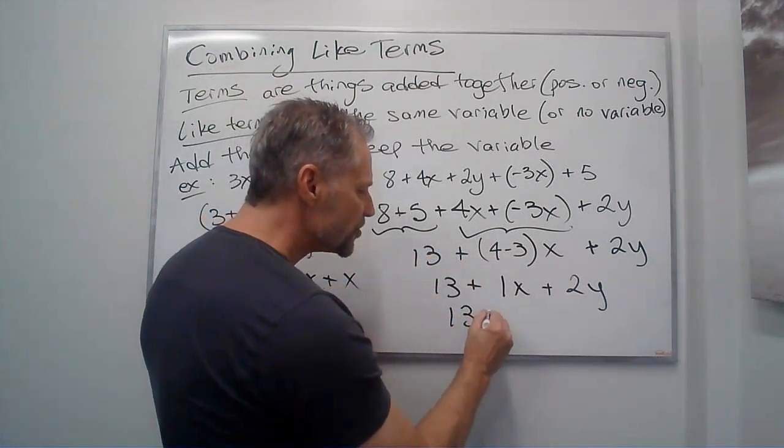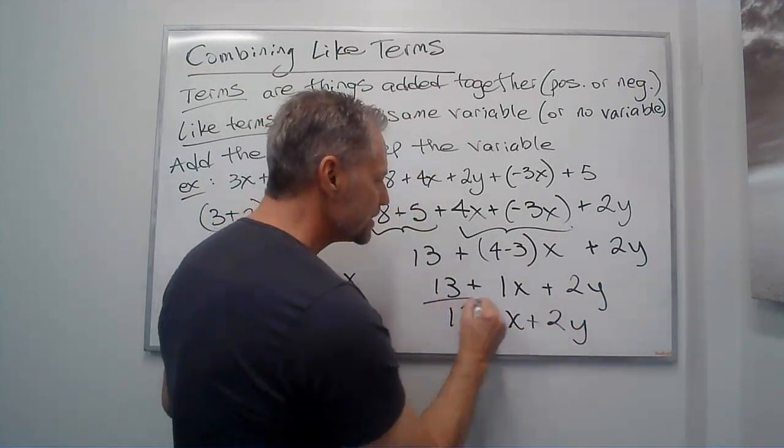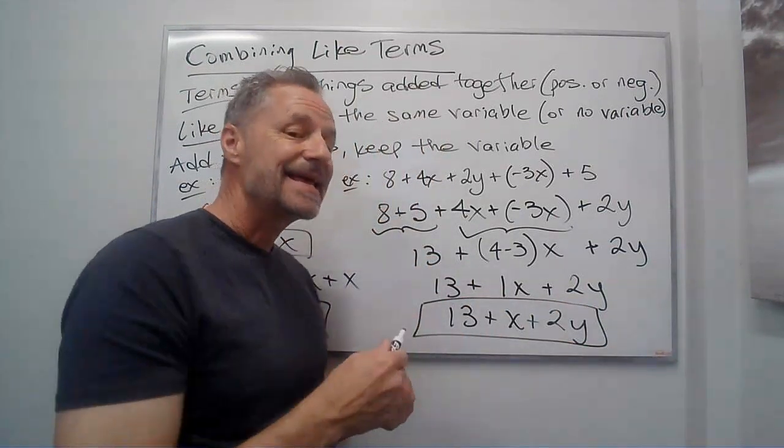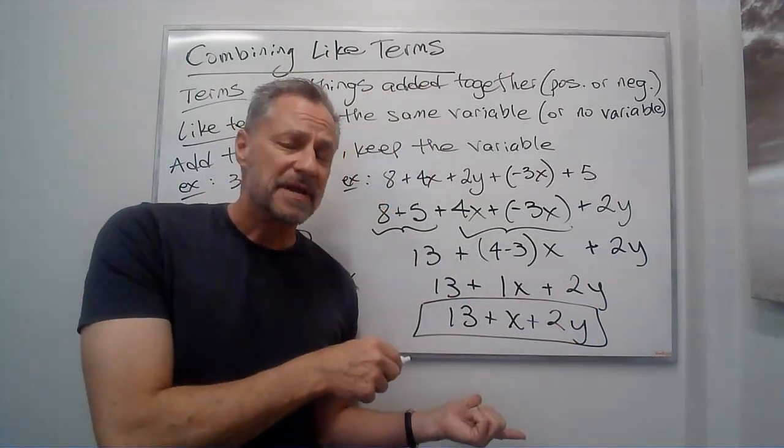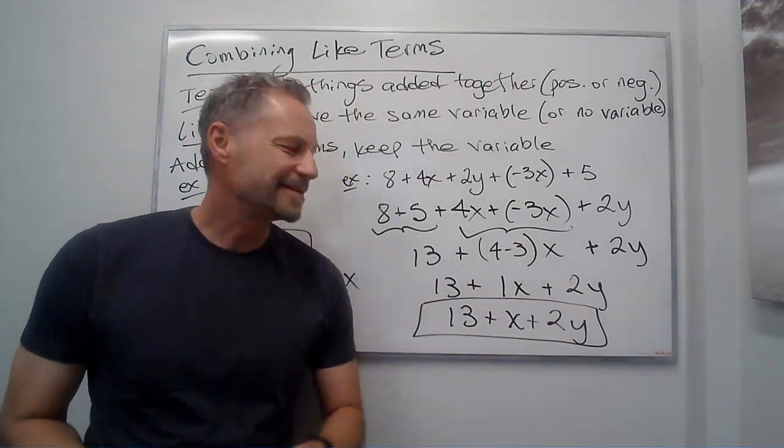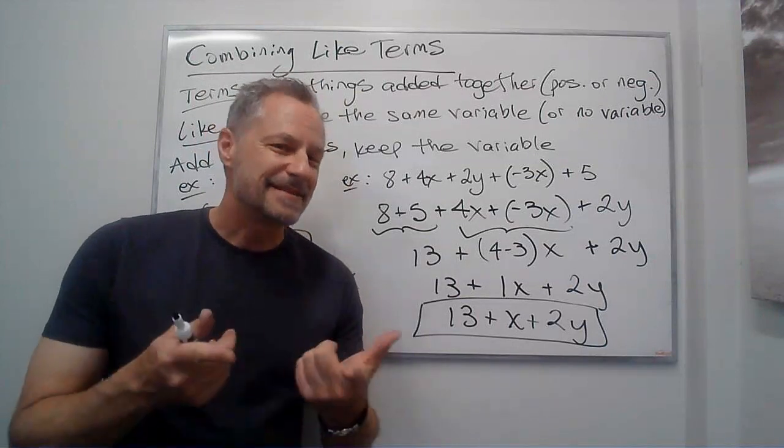We would usually write this as 13 plus x plus 2y. And that would be my answer. I can't simplify any further because none of those are like terms. Hope that helps. Keep working on it. Keep getting it.